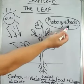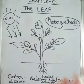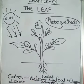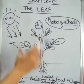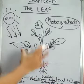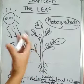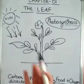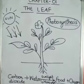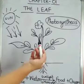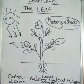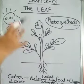Photo means light, synthesis means putting together. In photosynthesis, green plants prepare their food with the help of sunlight, carbon dioxide, water, and minerals from the soil. And what they give out? They give out oxygen.